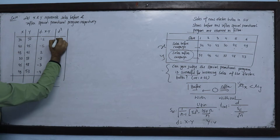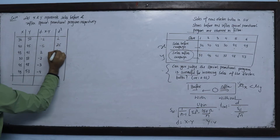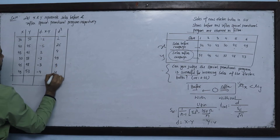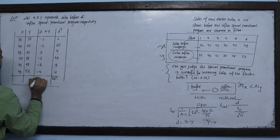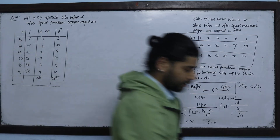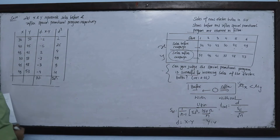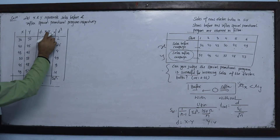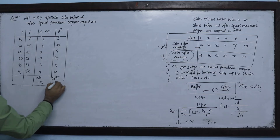D-squared values: (−1)² = 1; (−5)² = 25; 2² = 4; 49; 9; 16. Summation D = −18. Summation D² = 104.